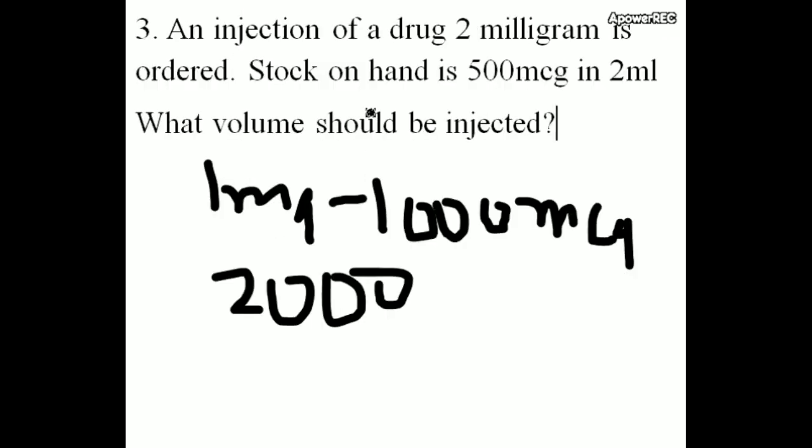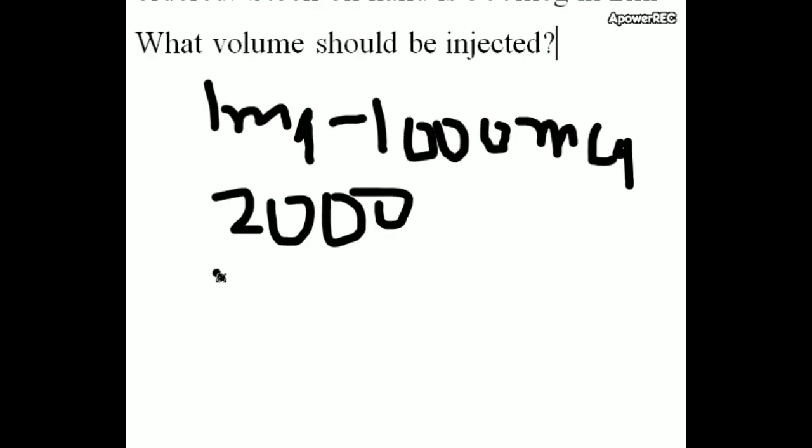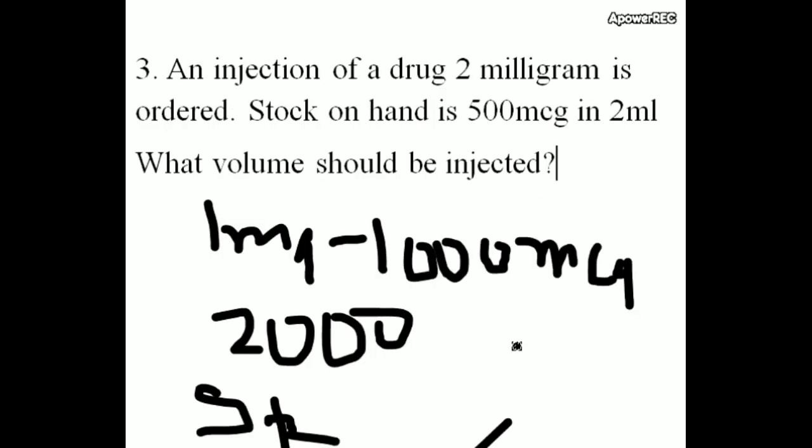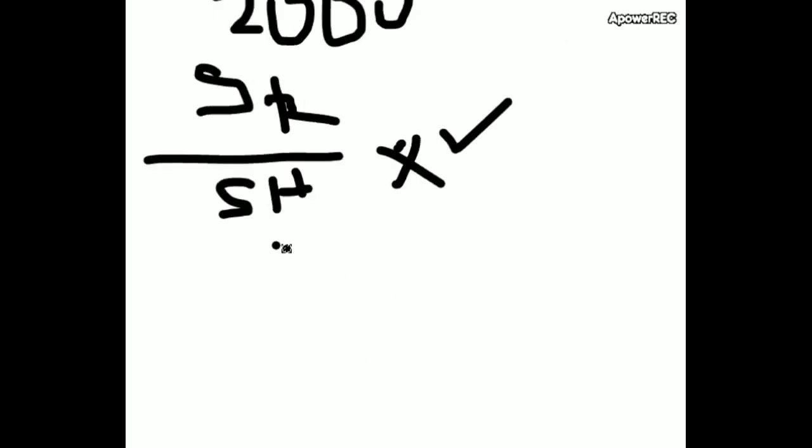Here stock ordered is 2 mg, that is 2000. So amount is equal to SR by SH into volume. So stock required is 2 mg, that is 2000 microgram.